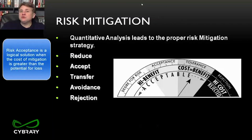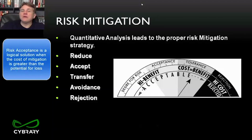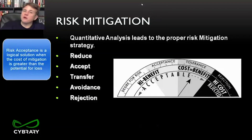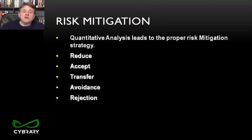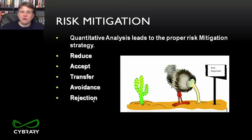When we accept a risk, honestly we do nothing. We have chosen to allow that risk to exist. We're going to keep an eye on it. We've documented the risk and have a paper trail explaining why we've chosen not to implement a strategy, because we don't want to be found liable. We want to protect assets to the degree that's warranted. Now, with risk rejection, you also do nothing about a risk — but with risk rejection, we don't have that paper trail.